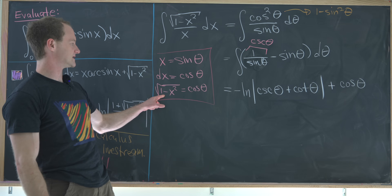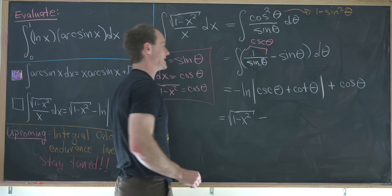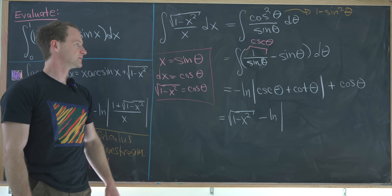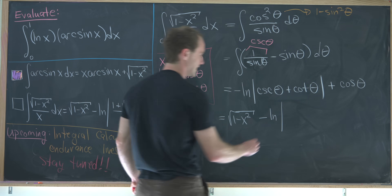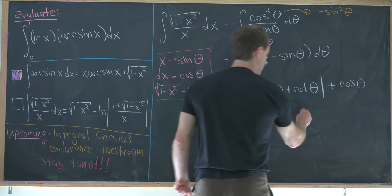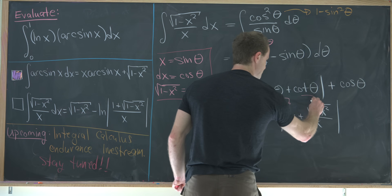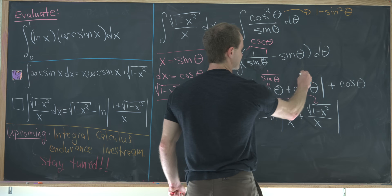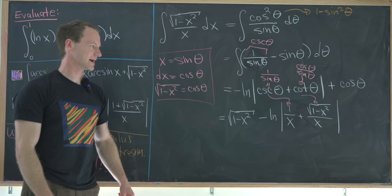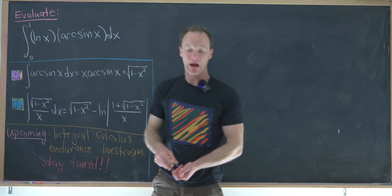Now I back-substitute to x. Cosine equals the square root of one minus x squared. Cosecant is one over sine, which gives one over x. Cotangent is cosine over sine, which gives the square root of one minus x squared over x. Putting those together in the absolute value, we achieve the second formula: the square root of one minus x squared minus the natural log of the absolute value of one over x plus the square root of one minus x squared over x.